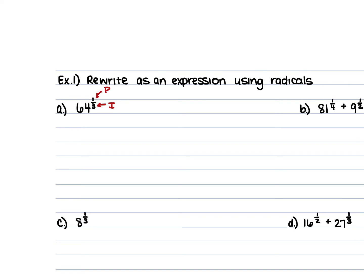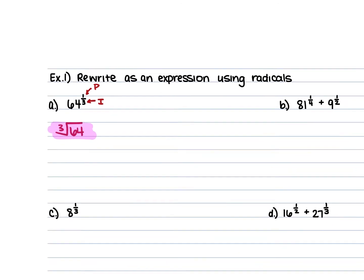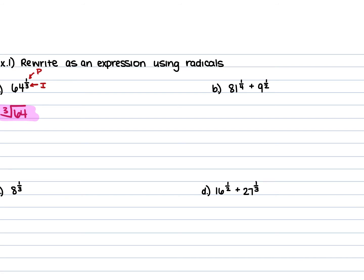So for example a: 64 to the power of one-third. The 1 is going to stay as your power, and the 3 is going to become your index. So we're taking the cube root of 64. This is not asking us to simplify — it's just asking us to rewrite using radicals. So we leave it in the form of the cube root of 64.